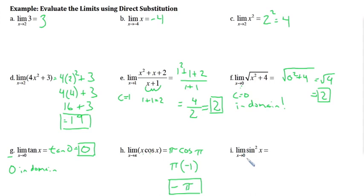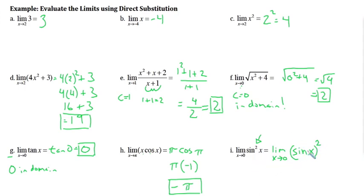For the limit of sin²x as x goes to 0 — anytime you see sin squared, think of it as (sin x)², meaning sine of x, squared. This becomes a composite/polynomial-type function. We check that 0 is in the domain, then use direct substitution: sine of 0 is 0, and 0 squared is also 0. So our limit is 0.